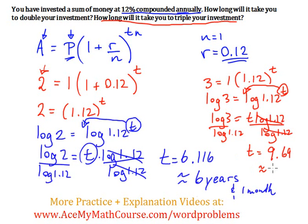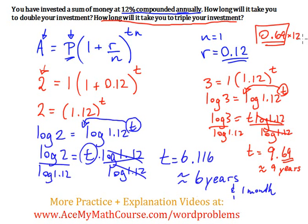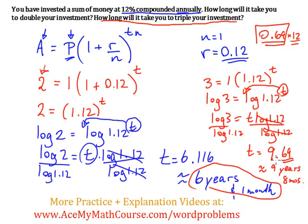So we have 9 years. To figure out the number of months beyond that, we go 0.69 times 12, because that's a portion of the year beyond the 9 years, and we multiply by 12 months in a year. So 0.69 times 12 is approximately 8 months. So if you're investing at 12% compounded annually, it will take about 6 years to double your investment and 9 years and 8 months to triple it.